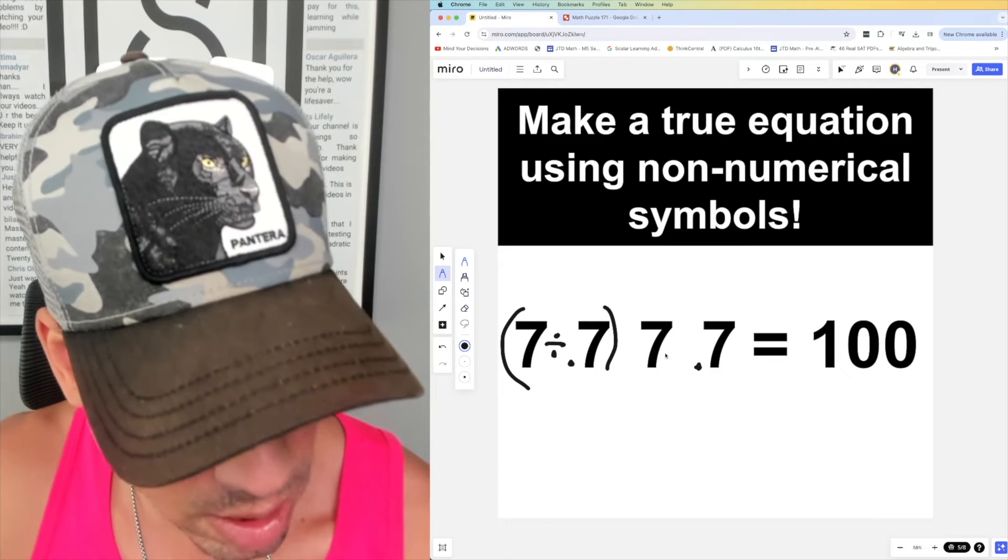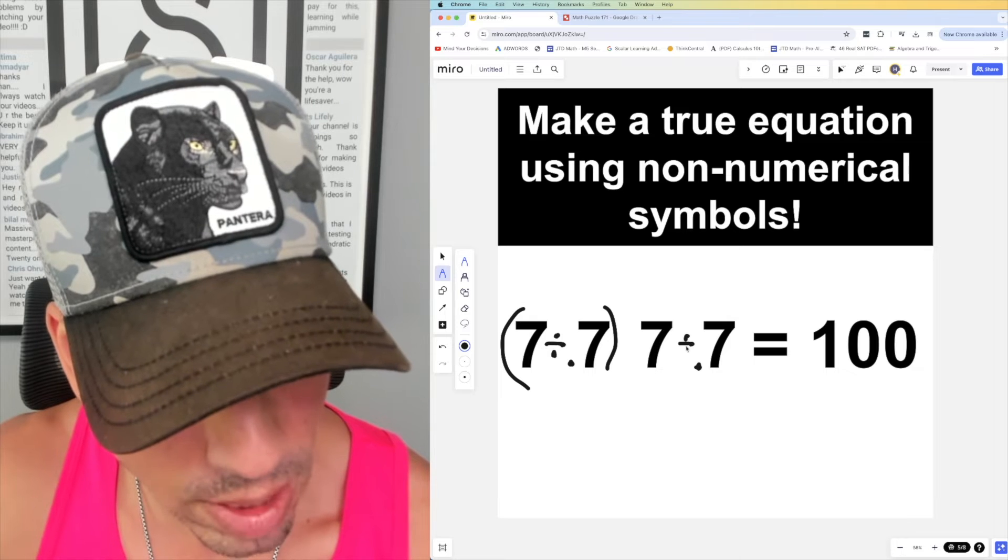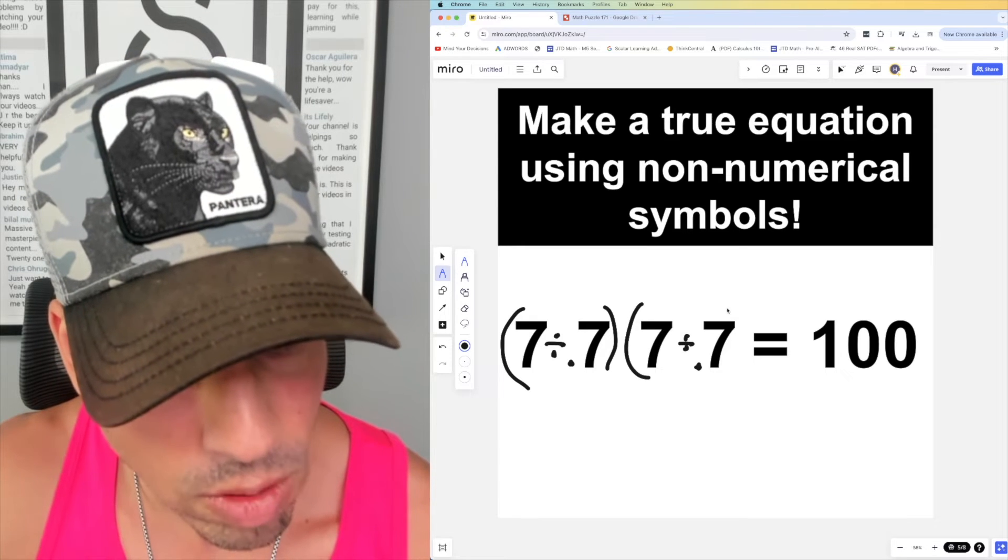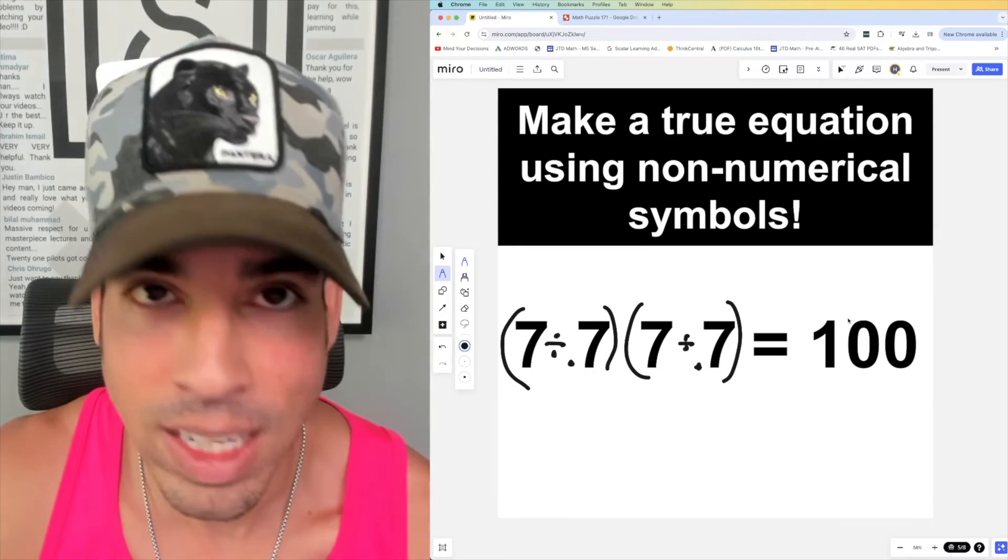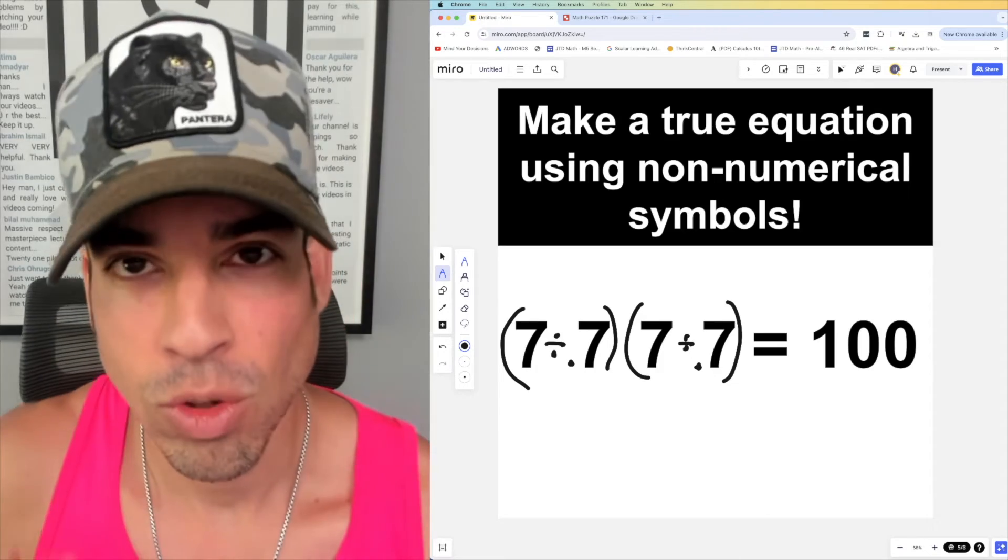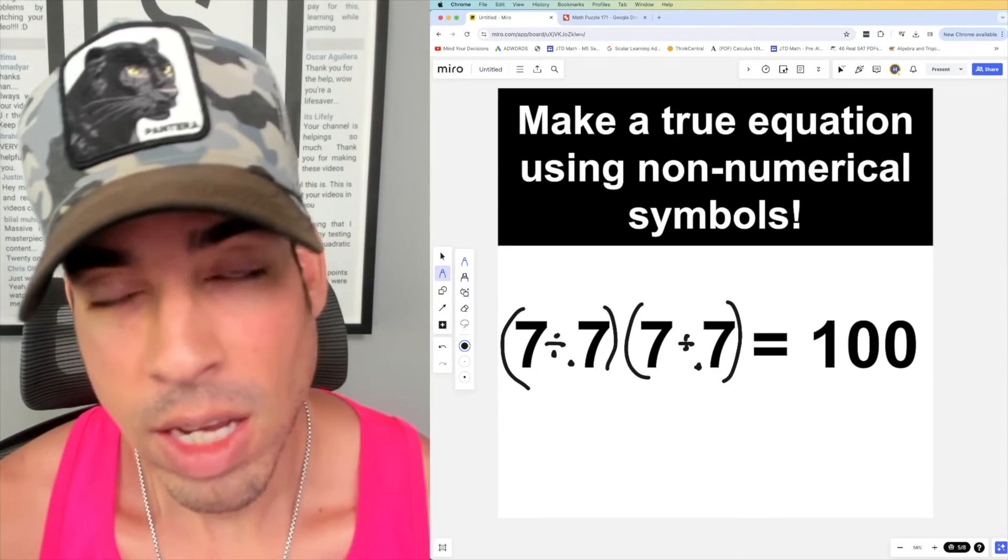Because if I do it again, 7 divided by 0.7, I get another 10. Now just multiply 10 by 10, and guess what you get? 100. So that's how you do it. Now if you guys have other ways to...